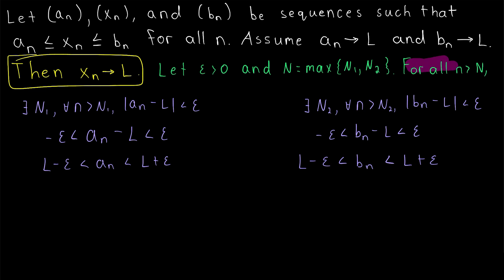So our big N will be the maximum of big N_1 and big N_2. And then of course, we'll show that for all n greater than big N, we get our desired inequality that x_n is going to be within epsilon of the limit L.